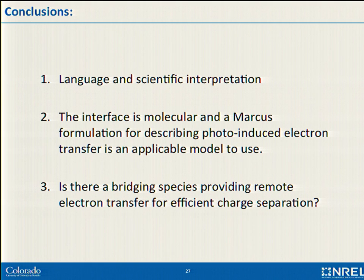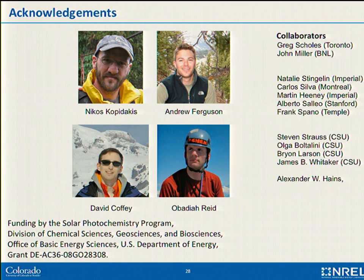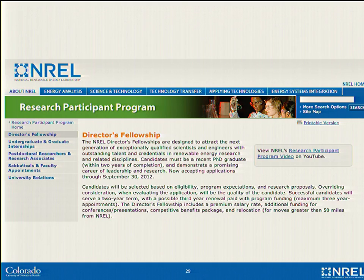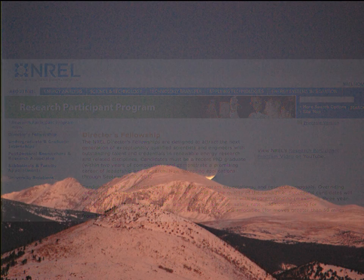I will finish there. I've tried to use two different languages to describe what's going on — we just need to make sure we're not arguing when we're in fact talking about the same thing. I believe the interface is molecular and we need to use Marcus theory to understand it. I also postulate that there's a bridging species that exists between the donor and the acceptor, and we need to learn how to bring it in deliberately and not adventitiously. Acknowledgements to my colleagues at NREL and funding from the Department of Energy Office of Science. Thank you very much.